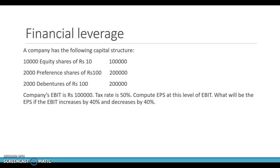We also need to find out what will be the EPS if EBIT increases by 40% and if EBIT decreases by 40%. So we will have to find out the earnings per share and how it will change for a 40% change in EBIT.